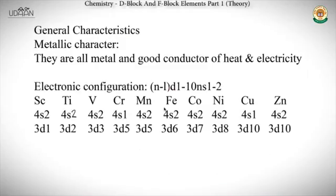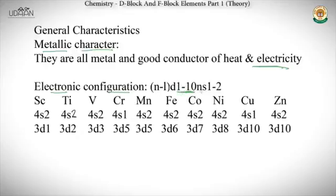Now let's discuss the general characteristics of D and F block elements. First, metallic character: they are all metals and are good conductors of heat and electricity. Regarding electronic configurations, they all have a configuration of (n-1)d¹⁻¹⁰ ns¹⁻² electrons.